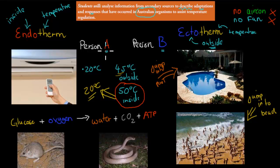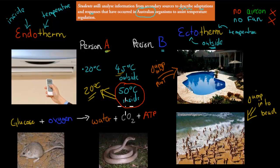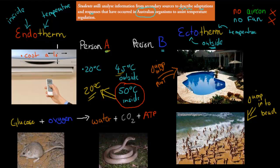Don't forget, person A, if he wanted to, could also jump into the beach or pool. So person A has two options — he can use the environment, or he can use his internal mechanisms, or both. Whereas person B only has that one option. Now, one negative with the aircon analogy is that aircon costs a lot of energy or electricity.